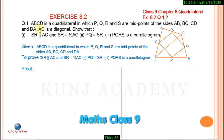Exercise 8.2, Question 1. ABCD is a quadrilateral in which P, Q, R, and S are midpoints of the sides AB, BC, CD, and DA. AC is a diagonal.